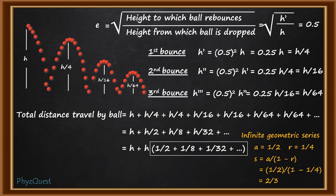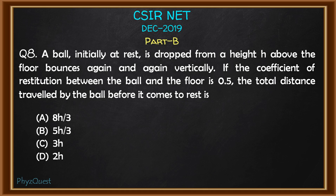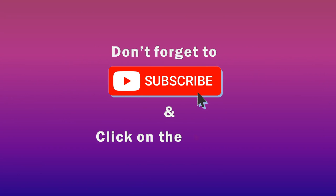Substituting this value, the total distance travelled by the ball is h + 2h/3 = 5h/3. Looking at the options, option B is the answer, so the correct answer for this question is option B, which is 5h/3.